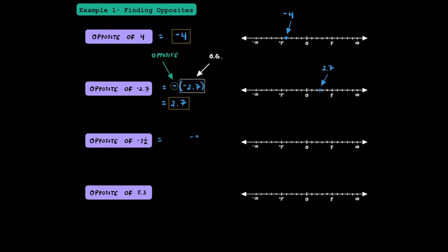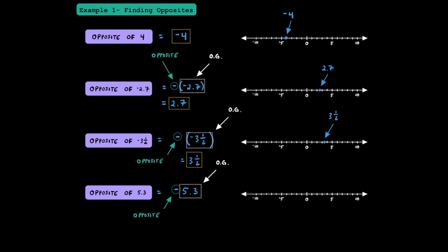Now let's find and plot the opposite of negative 3.5. First, write the original number down, put it in parentheses, and put a negative in front to show the opposite. The opposite of negative 3.5 is just going to be positive 3.5. Try plotting it on a number line, and it should be exactly between 3 and 4. Now let's find the opposite of 5.3. Write down 5.3 and put a minus sign in front to show the opposite. The opposite of 5.3 is just going to be negative 5.3, which should be a little bit to the left of negative 5. And that's how you find and plot opposites.